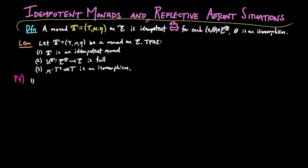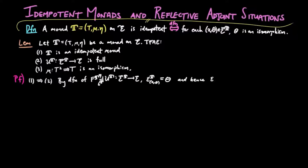To prove 1 implies 2: by definition of the free-forgetful adjoint situation for the Eilenberg-Moore category, the co-unit εT on the component xθ is the T-action θ. Then since the monad T is idempotent, we have εT is an isomorphism. Therefore, ut is full and faithful, by a result proved in our playlist on adjoint situations.